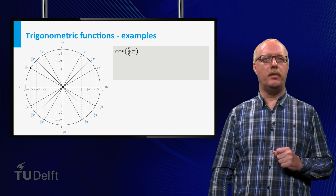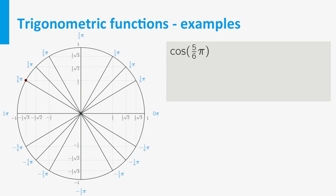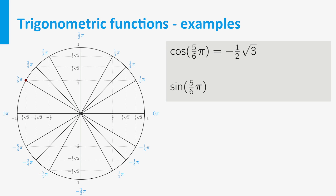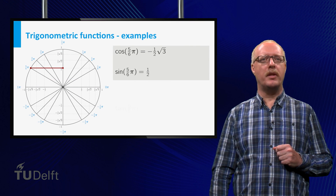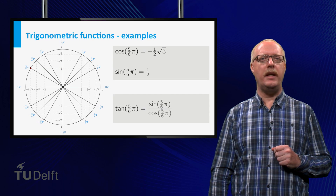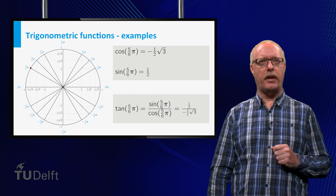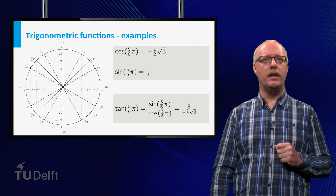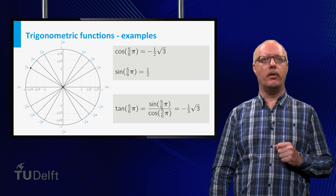Let us look at an example. If we want to find the value of the cosine of 5π/6, we make a turn with an angle of 5π/6 in the positive direction, which is counter-clockwise, until we reach 5π/6 on the unit circle. Now we look at the horizontal axis and obtain the value minus one half times the square root of 3. For the sine of 5π/6, we look at the vertical axis and obtain the value plus one half. The tangent is the quotient of the sine and the cosine, which equals plus one half divided by minus one half times the square root of 3, simplifying to minus one third times the square root of 3.